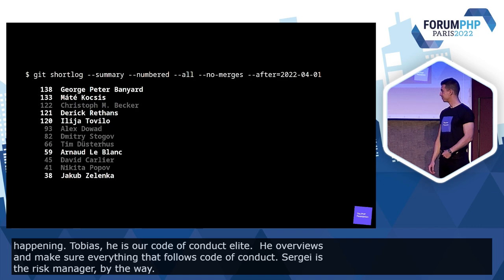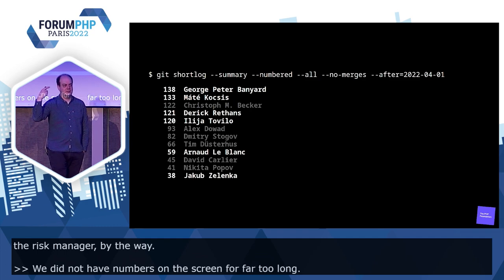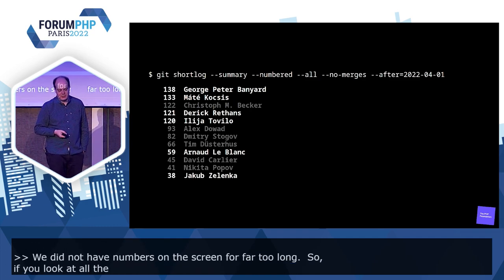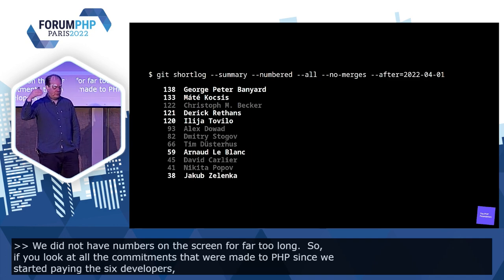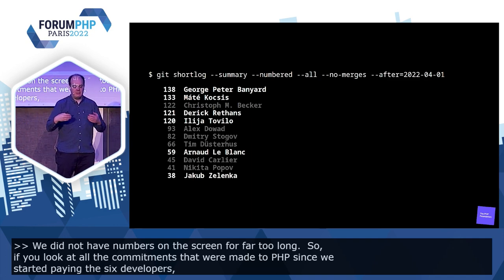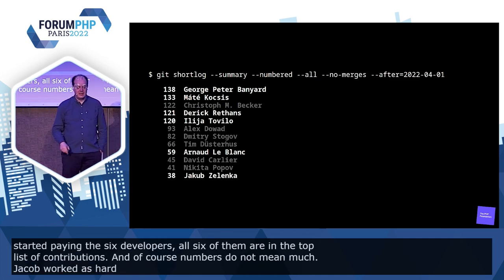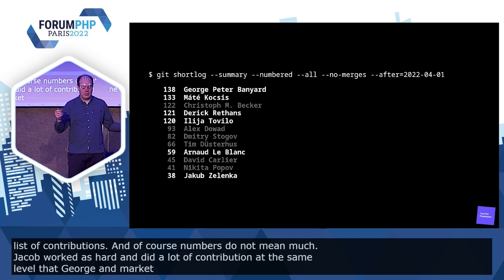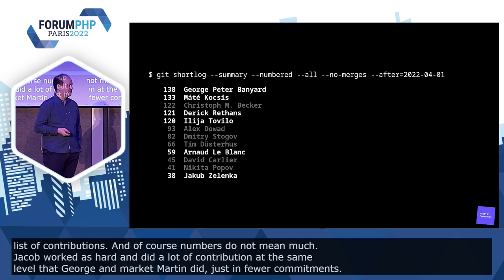If we look at all the commits made to PHP since we started paying those six developers, all six of them are in the top list of contributions. Of course, numbers don't mean much — Jakub worked as hard and did contributions at the same level as George and Marta and Derek and Ilya, but just in fewer commits. But this looks quite good. You can see that it's just a big part of PHP development currently.